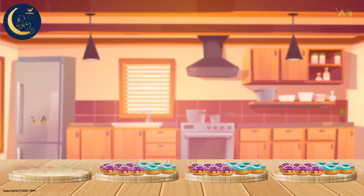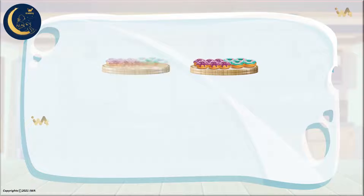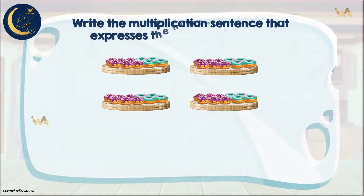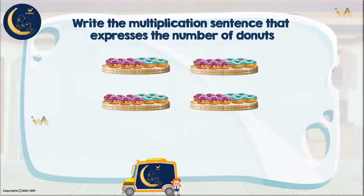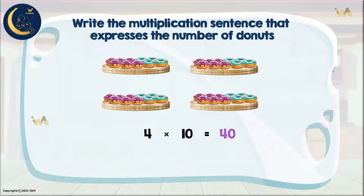Look at these groups of doughnuts. Can we express the following pieces of doughnuts using an appropriate multiplication sentence? Yes, we can, because the number of items in all groups is equal. We write the number of groups multiplied by the number of items in one group. How many groups do we have? Four. How many items? Ten. We have four multiplied by ten equals forty, so we have forty pieces of doughnuts. It can also be read as four tens. Four multiplied by ten equals forty.